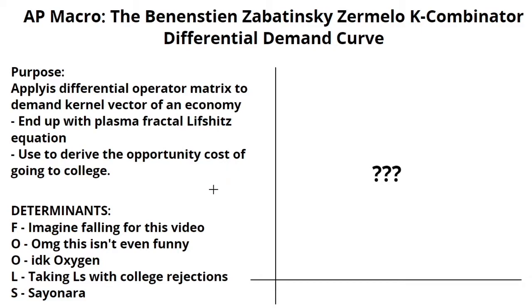Okay, so what are its determinants? Here it is: FOOLS. F is for 'imagine falling for this video.' O is for 'OMG, this isn't even funny.' The other O is because I ran out of ideas, so — oxygen. L is for taking L's with college rejections. And S is for sayonara, because this prank video is getting too long and I need to go. Happy April Fools.